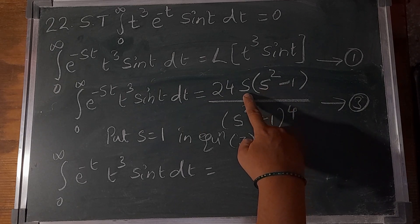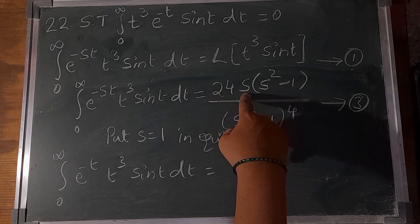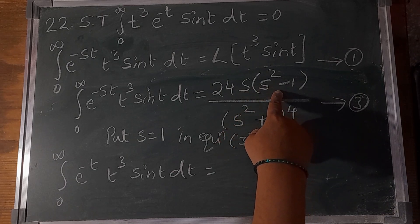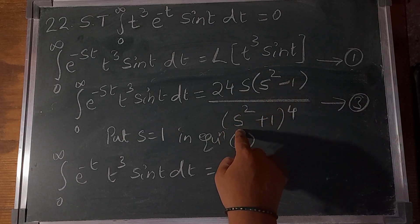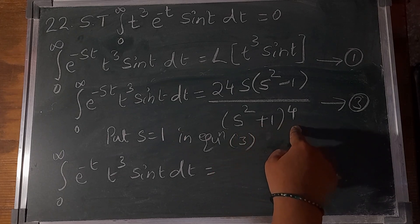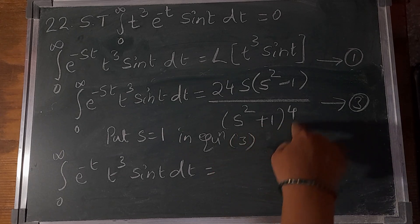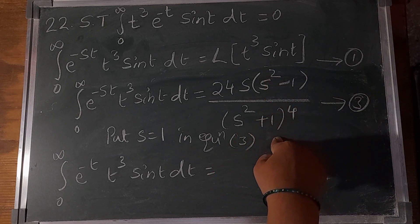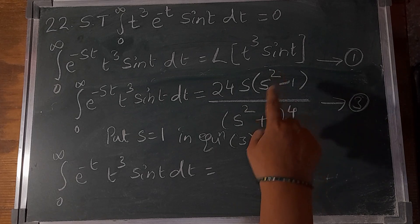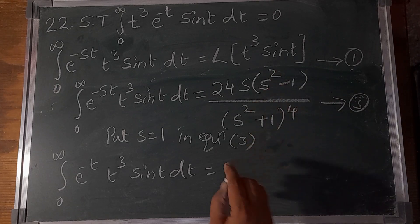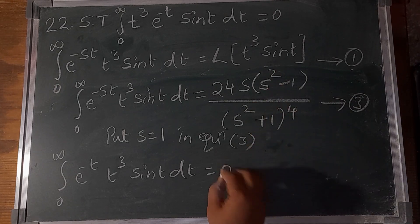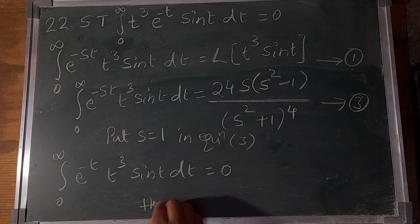With s = 1: 24 × 1 = 24, and 24 × 0 = 0. Also, 1² + 1 = 2, and 2⁴ = 16. So 0/16 = 0. Zero divided by any value is 0. Hence proved.